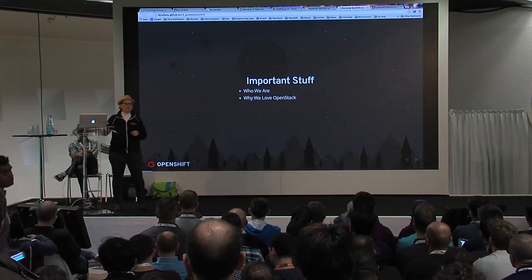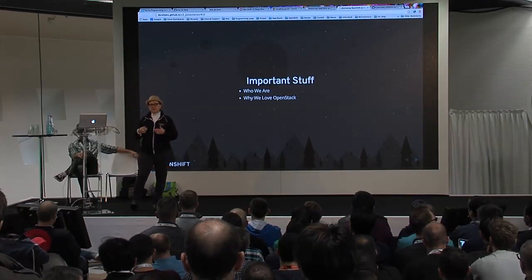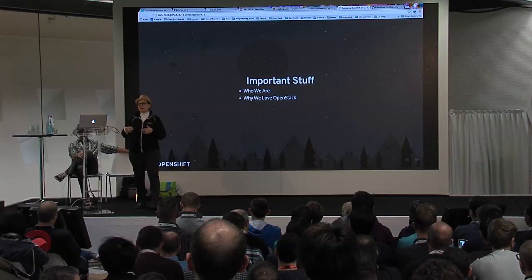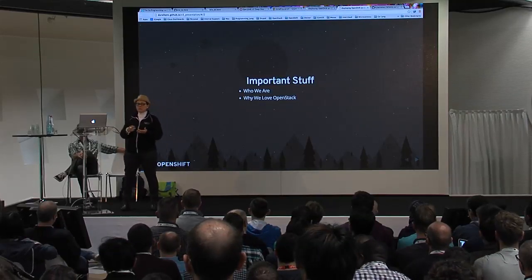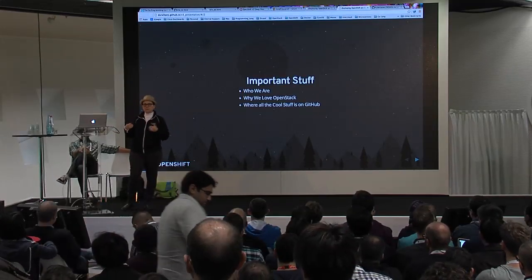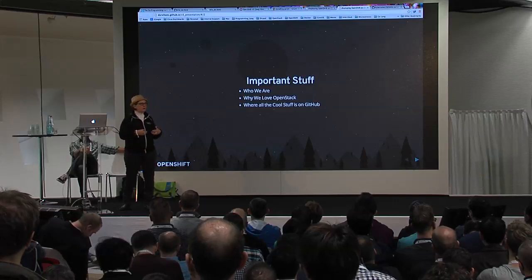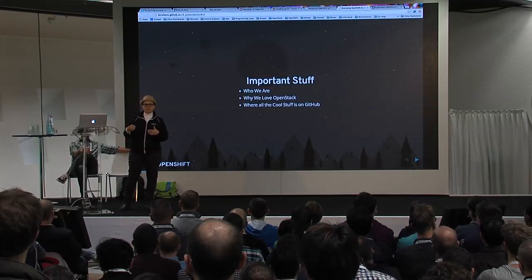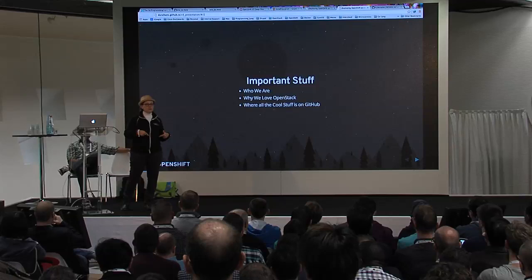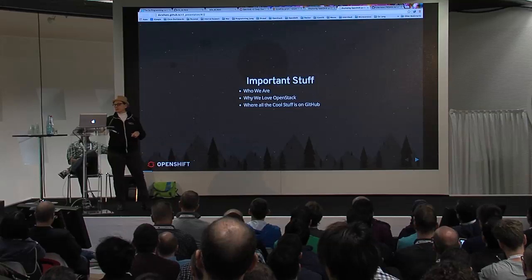We love OpenStack and open source. I have a couple of other Red Hat presentations — tomorrow I'm giving one on cross-community collaboration. We've done great work with the Heat team on OpenStack to make templates available for OpenShift, both Origin and Enterprise. All our cool stuff is on GitHub. Follow me at PythonDJ on Twitter — I've tweeted out the link to this presentation, a reveal.js slide deck.